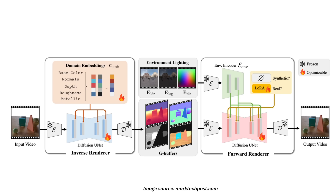To train the forward renderer, the researchers combine synthetic data with auto-labeled real-world data using a robust training pipeline. They use their own inverse renderer to pseudo-label 150,000 real-world video segments from the DL3DV10K dataset and incorporate lighting estimates via Diffusion Light.